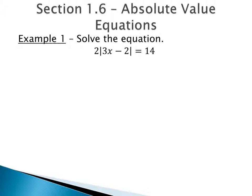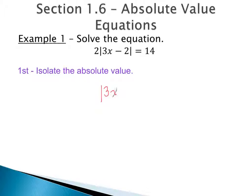In this lesson, we're going to be solving absolute value equations. The first step is to isolate the absolute value. Since we have a 2 in front of the absolute value that's being multiplied, I need to get rid of it by dividing both sides by 2. So that means I have the absolute value of 3x minus 2 equals 7.